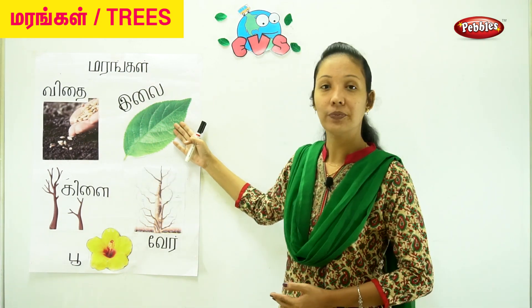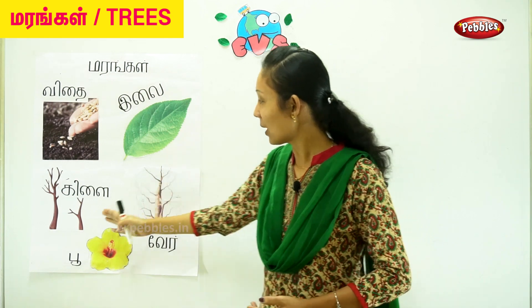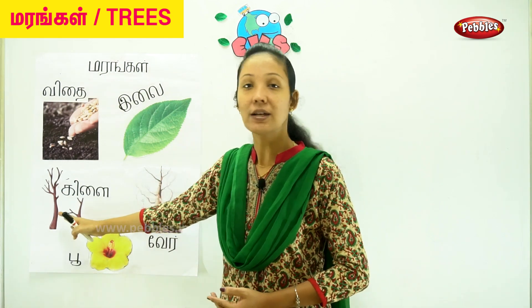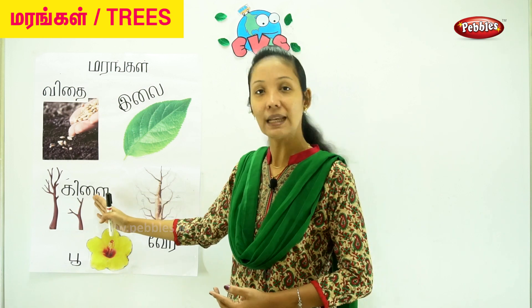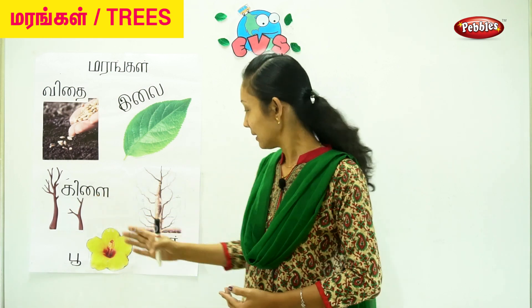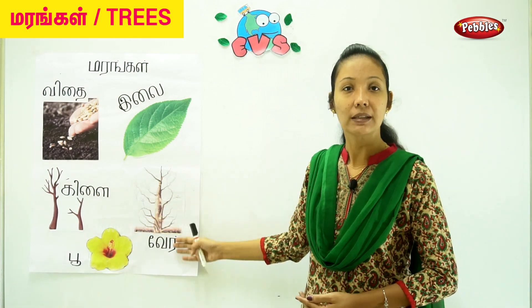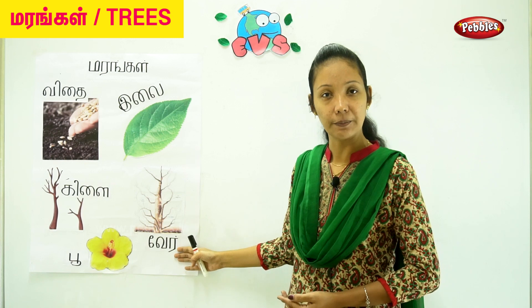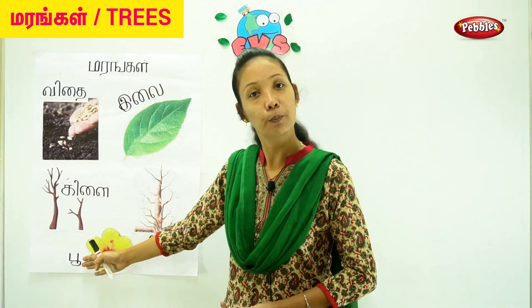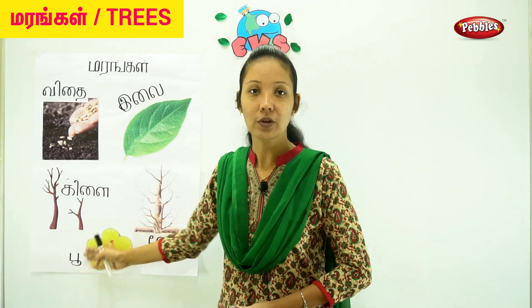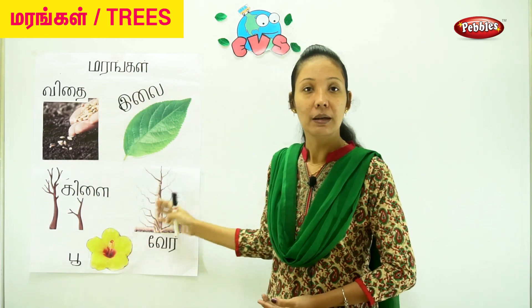Then you have the leaf — that is 'ilai'. Then you have branches — that is 'killai'. Then you have the roots — that is 'veru'. Then you have flowers — that is 'poo'. So these are the parts of the plant.